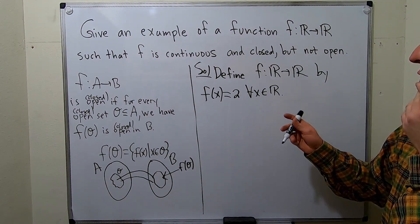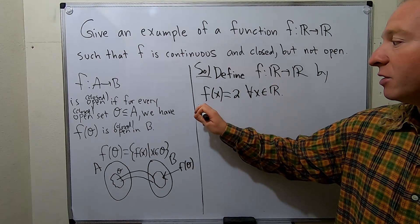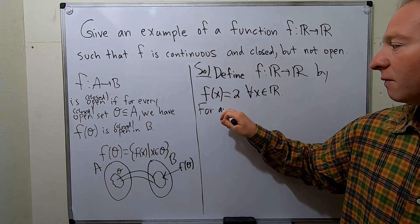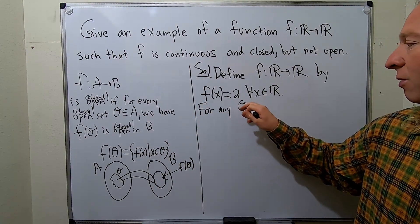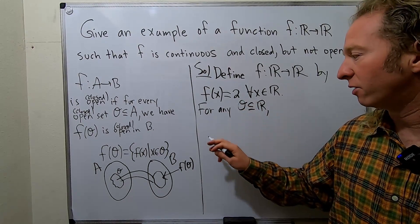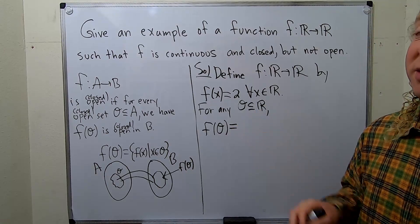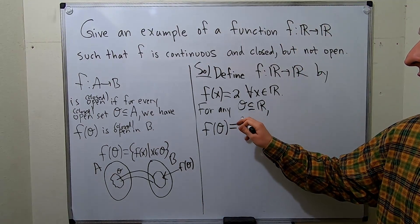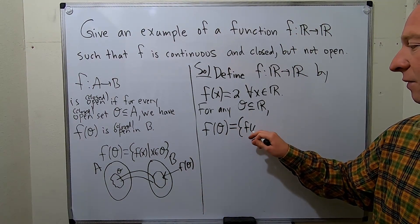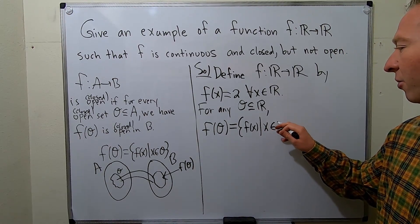So now we just need to take a set, a subset here and look at the direct image. So for any o contained in R, we can look at the direct image of o under f. This will be the set of all f(x) such that x is in o.